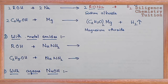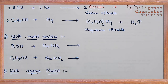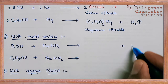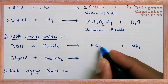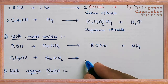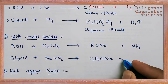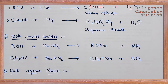The second reaction showing acidic nature is the reaction with metal amides. For example, sodium amide (NaNH₂) reacts with alcohol. The reaction produces NH₃ and sodium alkoxide. For example, ethyl alcohol reacts with sodium amide to give C₂H₅ONa (sodium ethoxide) plus NH₃. This is the reaction with metal amides, demonstrating the acidic nature of alcohol.